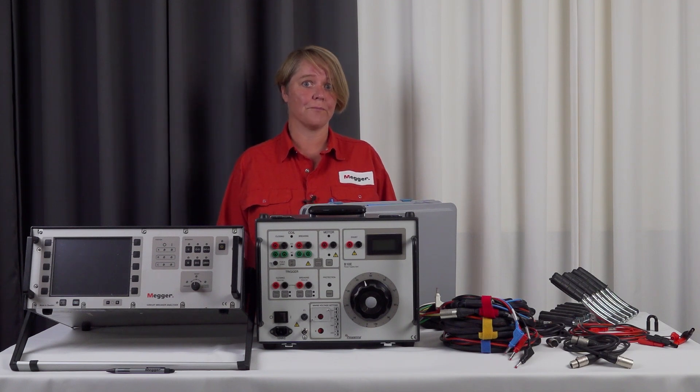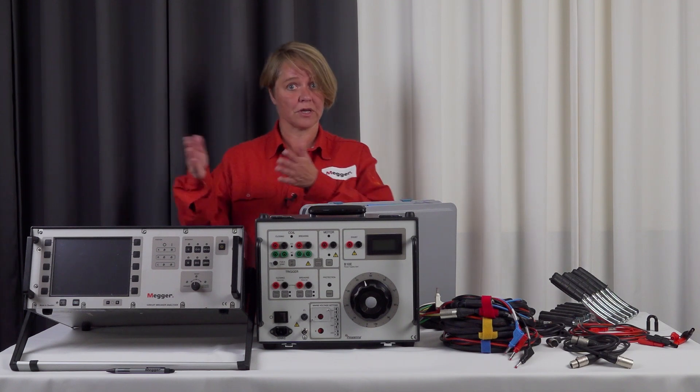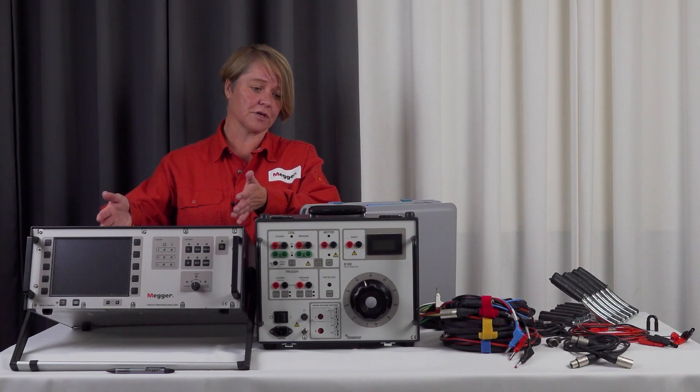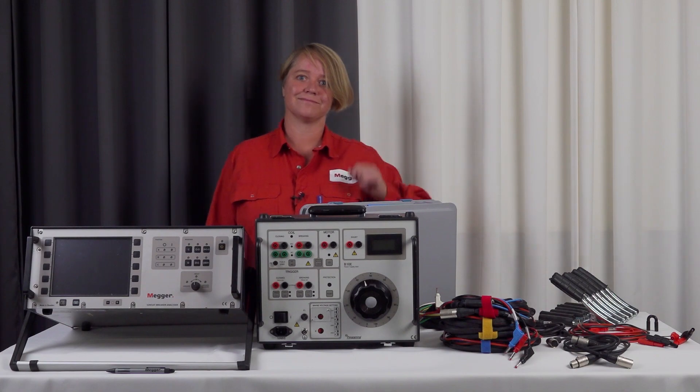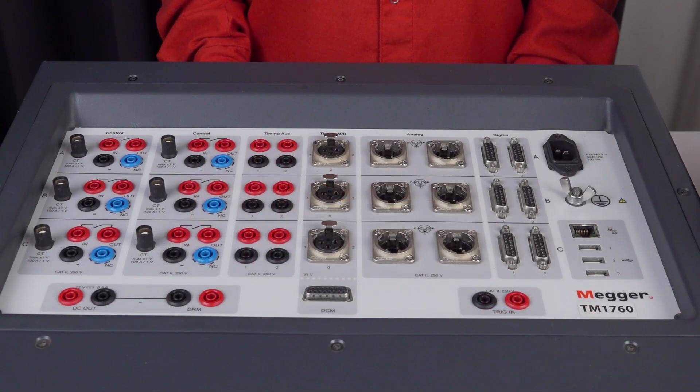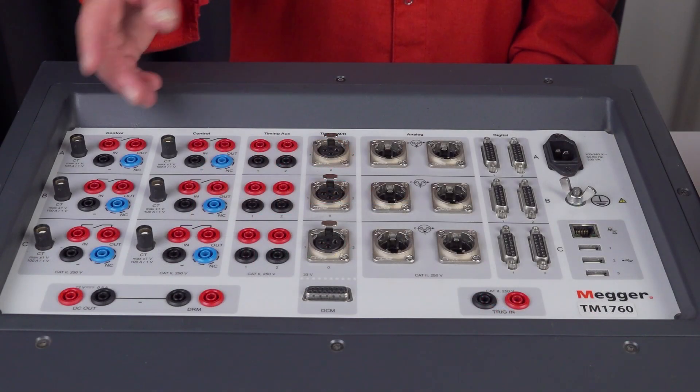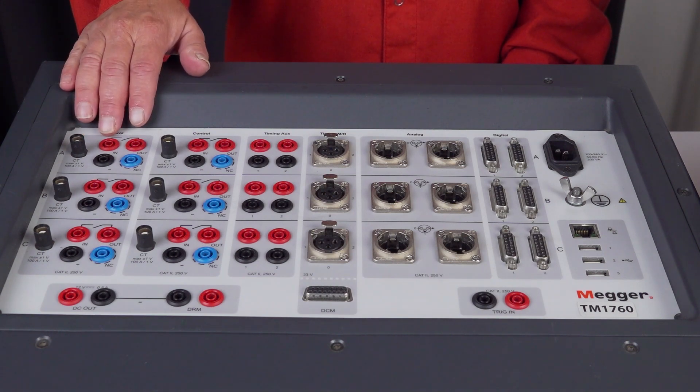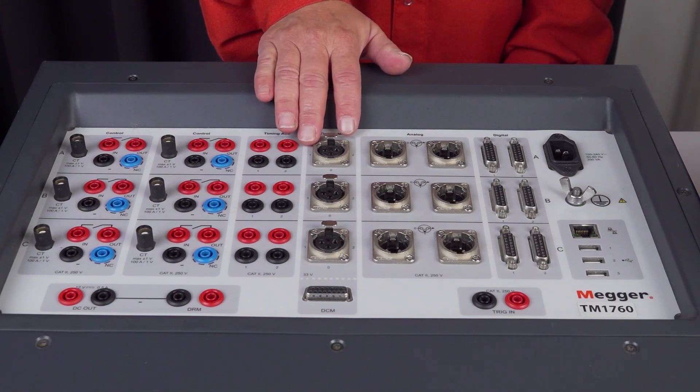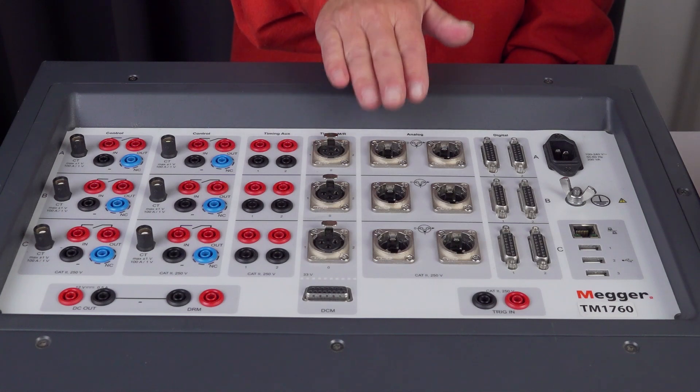Today we're going to measure a medium voltage breaker with use of our breaker analyzer TIM1700 and we're going to use a B10E to supply the circuit breaker during the operation. We are going to control the object from the control module. We're going to measure timing and we are going to measure motion.